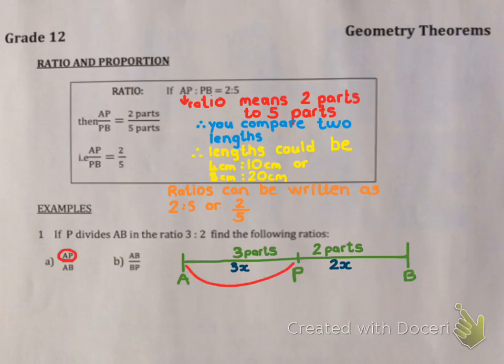Now let's have a look at these questions. It says find the following ratios. What is AP compared to AB? Now if I have a look at this, AP is 3 parts and AB will be 5 parts in total. So this ratio is 3 parts to 5 parts. You could say 3x to 5x, but then the x's will just cancel, so you can leave them out.